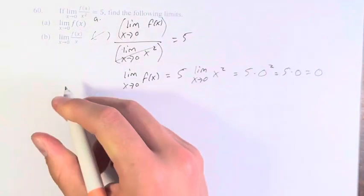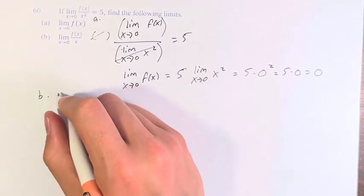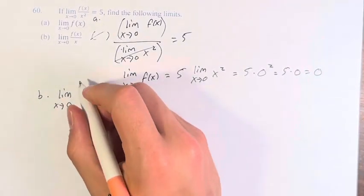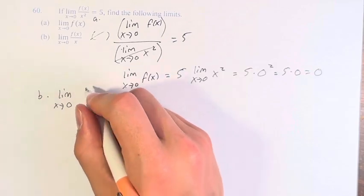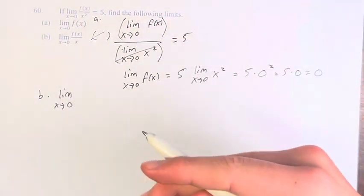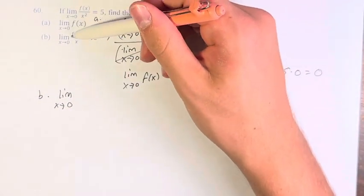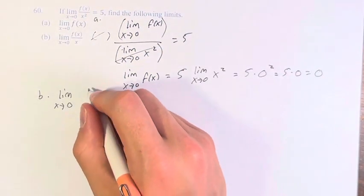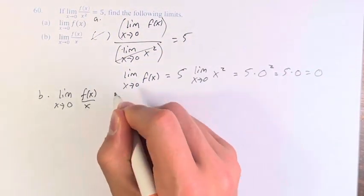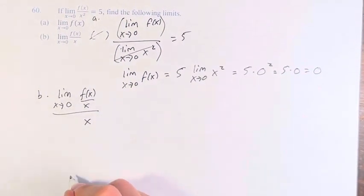That's for A. For B, we can see we have the limit as x approaches zero of f(x) over x squared. Now, we want to solve for f(x) over x. So we can say that this is f(x) over x divided by x.